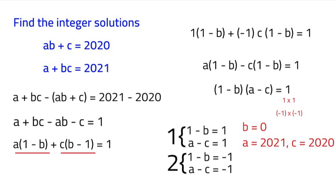So the next one, 1 minus B is equal to negative 1, which would have to be 2. If we go up top to our original equation, if we were to plug in 2 for B, it would be 2A plus C equals 2020.